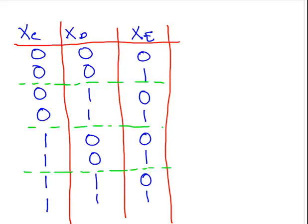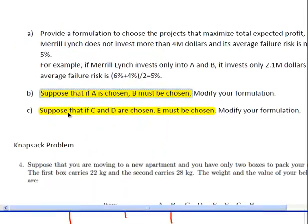The truth table has eight rows. Starting from the right: xe alternates 0,1 each row; xd alternates 00,11; xc has four zeros then four ones. So the only combination not allowed is when xc=1, xd=1, and xe=0 — if we built C and D, we must build E.